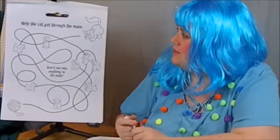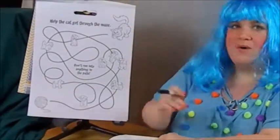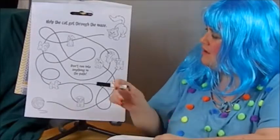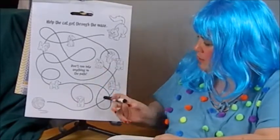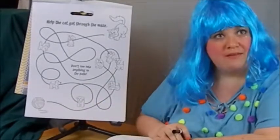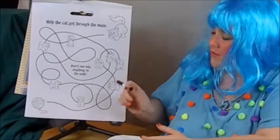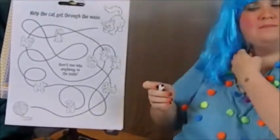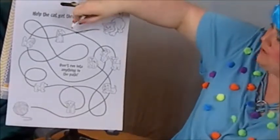So we have our little kitty friend up here in the corner who needs to get to their ball of yarn down here at the bottom. It says help the cat get through the maze, and down here it says don't run into anything in the path. So we got a bunch of little doggies all through the path, so we got to figure out how to get the kitty to the ball of yarn and not run into any of the puppies. Let's start tracing.